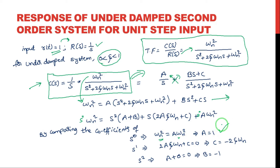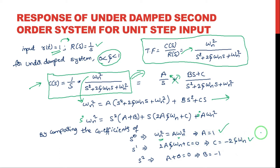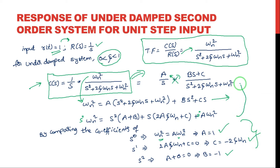By comparing the s⁰ coefficients: left side gives ωn², right side gives A times ωn². Cancelling ωn², we get A = 1. Now comparing s¹ coefficients: left side is 0, right side is 2Aζωn + C, so C = −2ζωn. Comparing s² terms: A + B = 0, and since A = 1, B = −1. We have successfully found all values: A = 1, B = −1, C = −2ζωn.